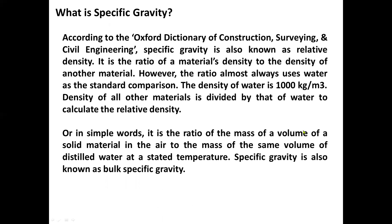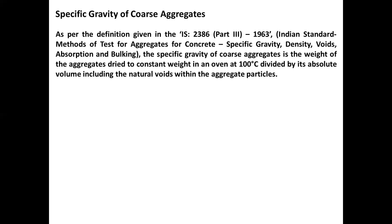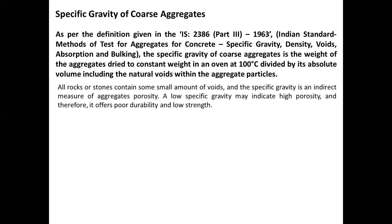Or in simple words, it is the ratio of the mass per volume of a solid material in air to the mass of the same volume of distilled water at a stated temperature. Specific gravity is also known as bulk specific gravity. The specific gravity of coarse aggregate is the weight of the aggregates dried to constant weight in an oven at 100 degrees Celsius, divided by its absolute volume including the natural voids within the aggregate particles. All rocks or stones contain some small amount of voids, and specific gravity is an indirect measure of aggregate porosity.